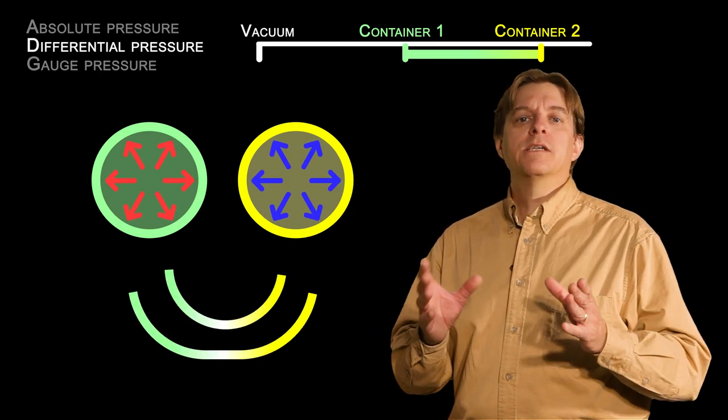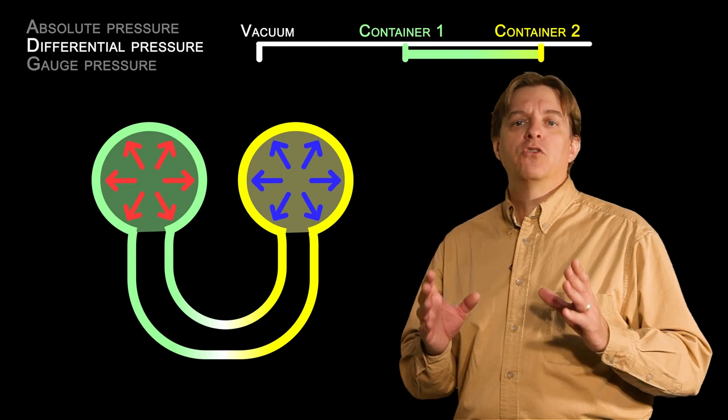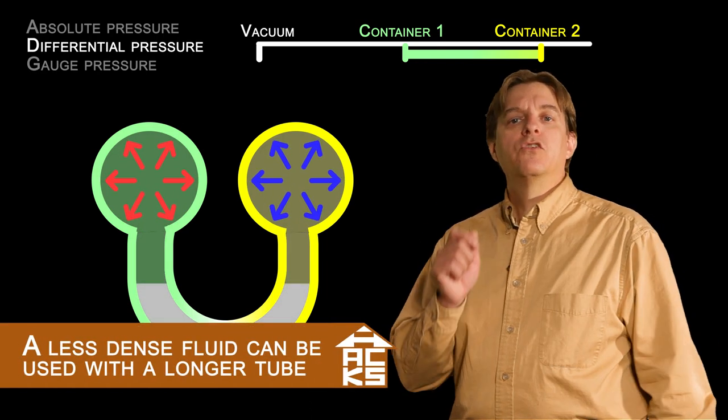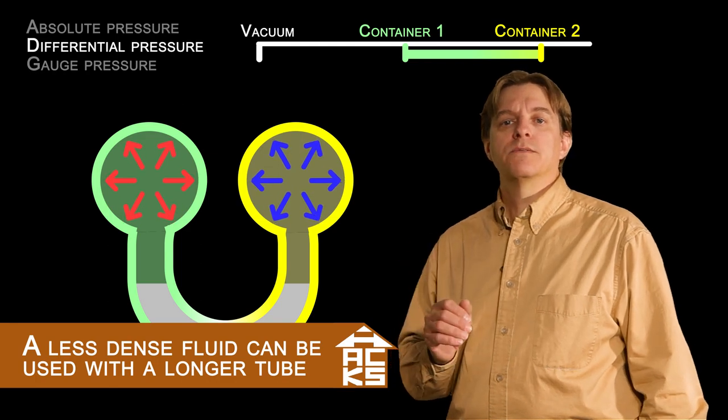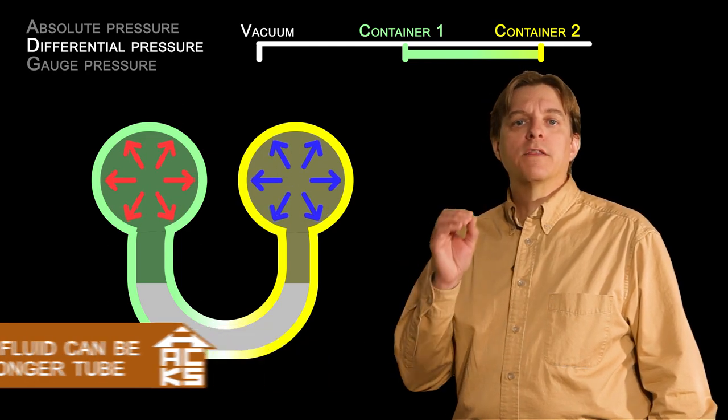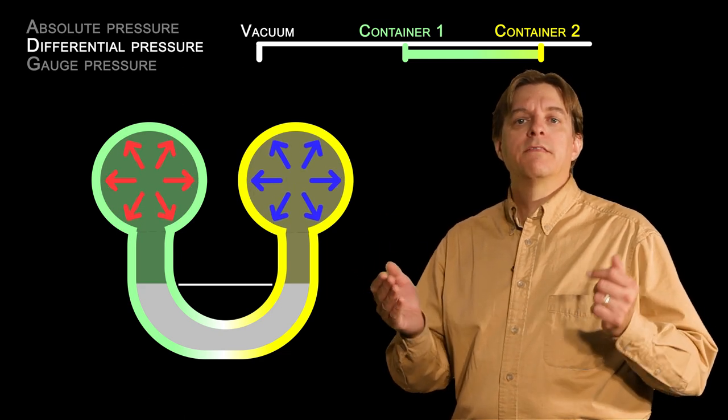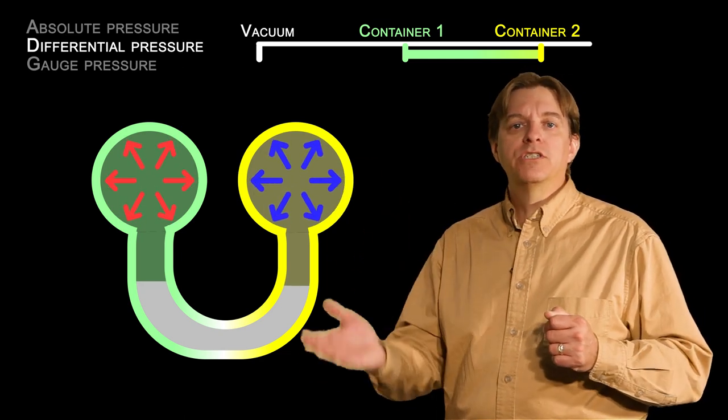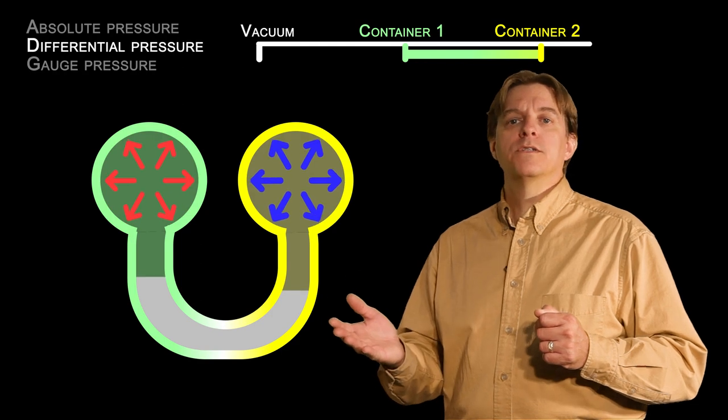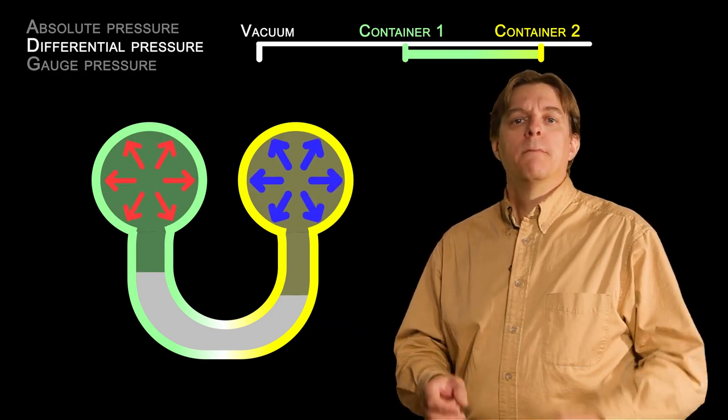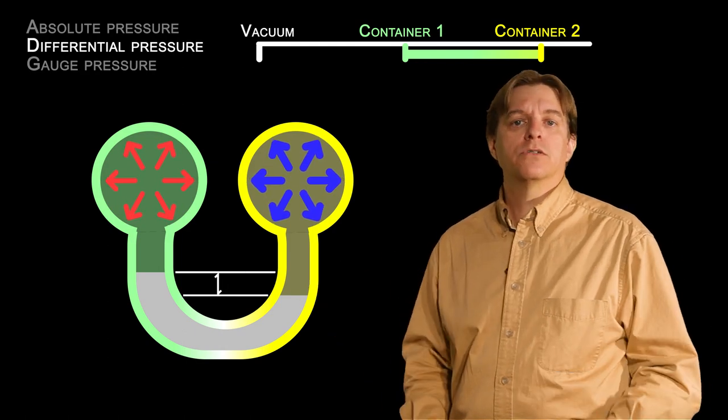If we now connect these two containers together with a U-shaped tube and put some heavy liquid in it, like mercury, we can directly measure the difference in pressures. If the pressures are the same, the liquid will be at the same height on both sides. If the pressure is greater on one side, it will push down on the liquid with more force and cause a difference in the height on both sides. Measuring the difference in heights will tell us the difference in pressures.